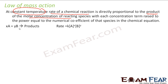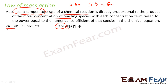For example, if I have x moles of A and y moles of B reacting to give some products, then the rate will be directly proportional to [A] to the power x multiplied by [B] to the power y. This is what the Law of Mass Action says.